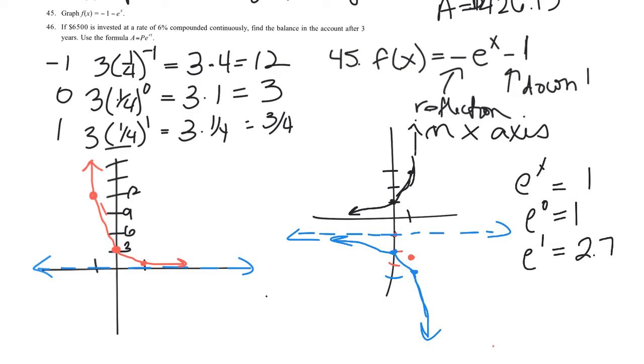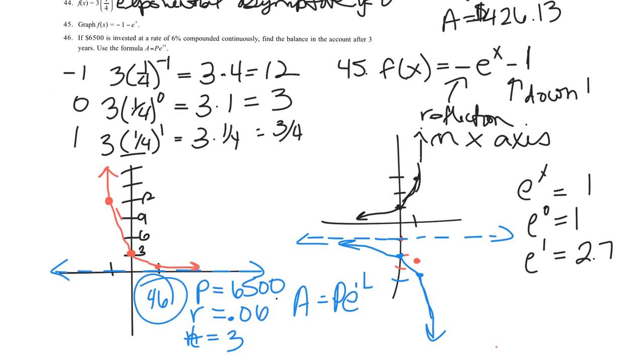Number 46. If $6,500 is invested at a rate of 6% compounded continuously, so P is 6,500, R is 0.06. Please make sure you put the decimal correct when you convert from a percent to a decimal. Find the balance after three years, so T equals 3. And our equation is A equals P E to the RT power.